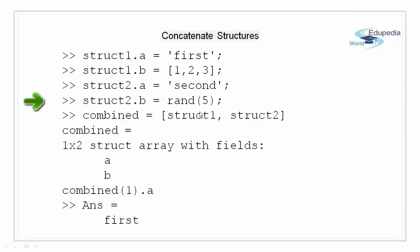Now I have concatenated structure 1 and structure 2 with square brackets into a single combined structure called combine. So when we view combine we get a 1 cross 2 structure array with fields A and B. This combine becomes the new structure in itself. So we can access the fields inside it just like any other structure using a dot notation followed by the field name.